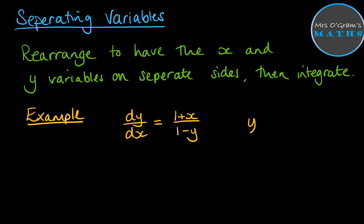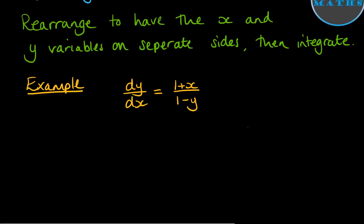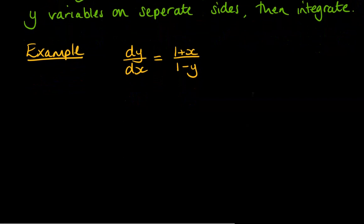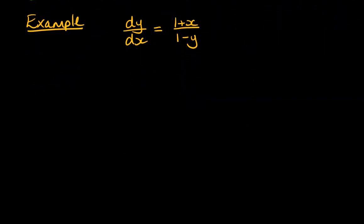Remember, we're trying to get to a general solution with these things, where we go y equals something plus c. So we can't just straightaway integrate this because we've got the x and the y all mixed together. What we need to do is rearrange so we have all the x's on one side and all the y's on the other, and then we can integrate.